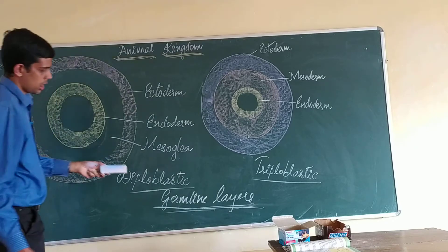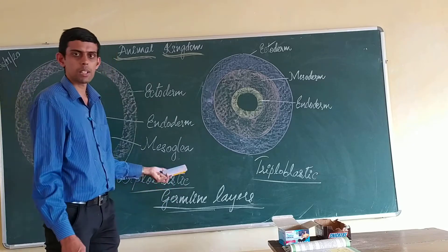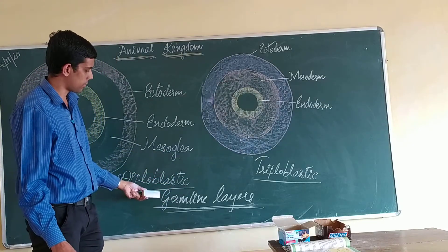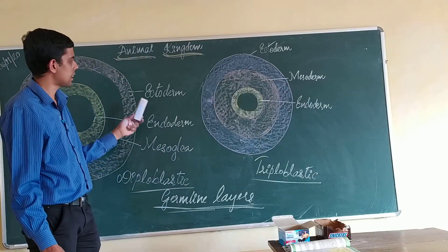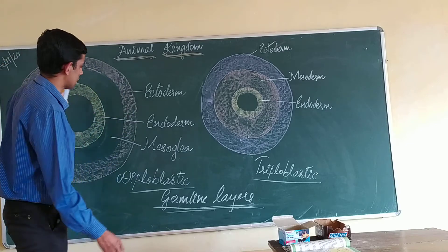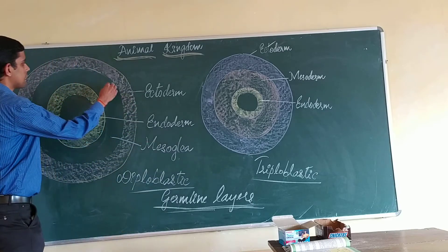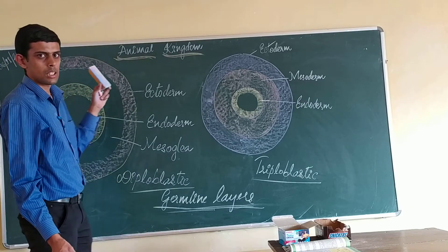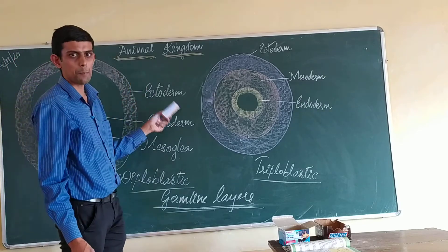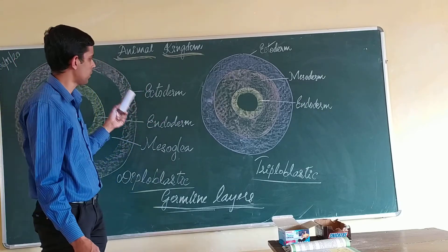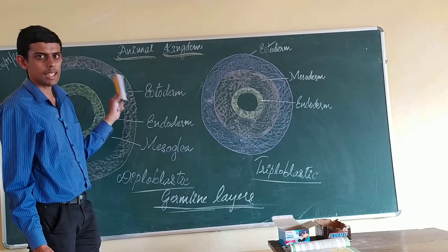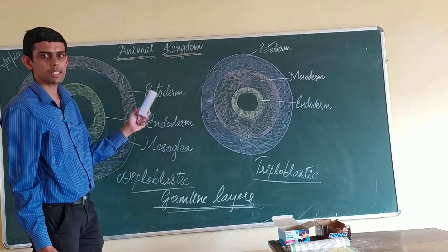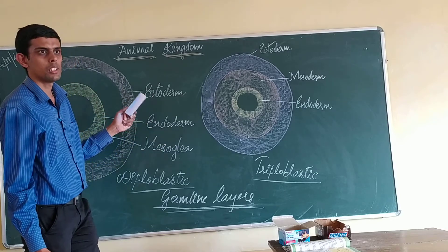Now what is meant by germ layers? The germ layers are layers present in the body of developing embryo. We usually have two to three such layers in the developing embryo.